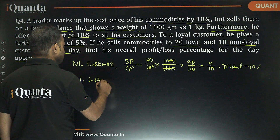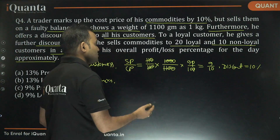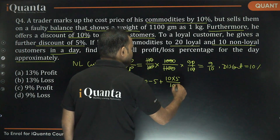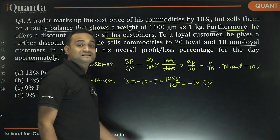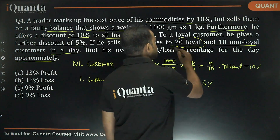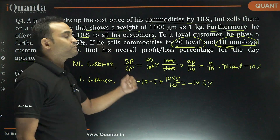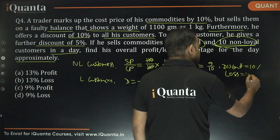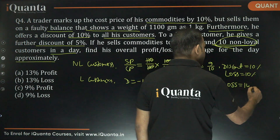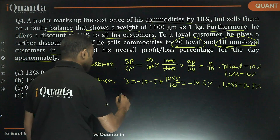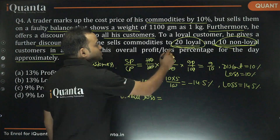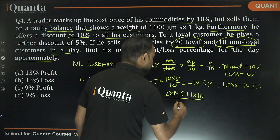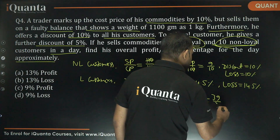For loyal customers, there's a further 5% discount. Using successive discounts of 10% and 5%: total discount = -(10 + 5 - 10×5/100) = -14.5%. So loyal customers result in a 14.5% loss. With 20 loyal and 10 non-loyal customers in ratio 2 to 1, the overall loss is (2×14.5 + 1×10) / 3 = 39/3 = 13%.